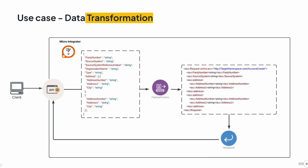Now we know how to start with an integration project, test it in the embedded micro integrator, create the compressed carbon application file, and deploy it in the micro integrator. Now let's move on to the several use cases I'm trying to demo. The first use case is the data transformation use case — ideally you get a JSON payload from the source, and with the use of the payload factory, I'll create an XML payload and send the response back to the client.